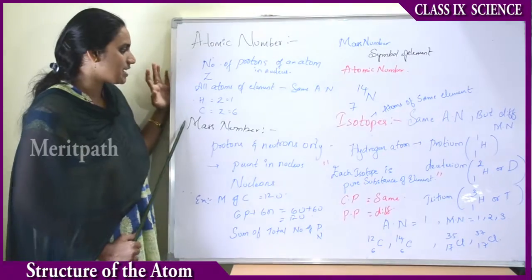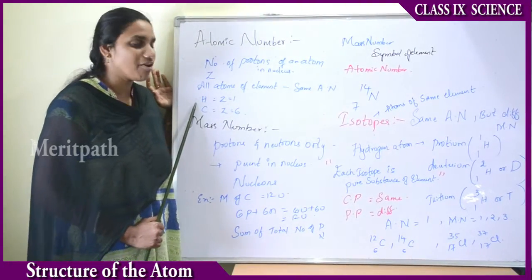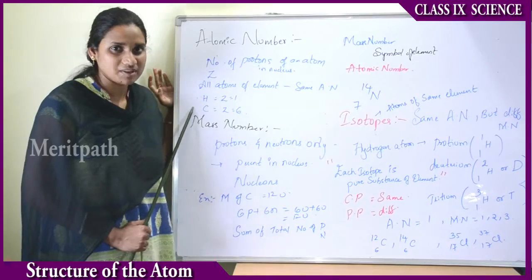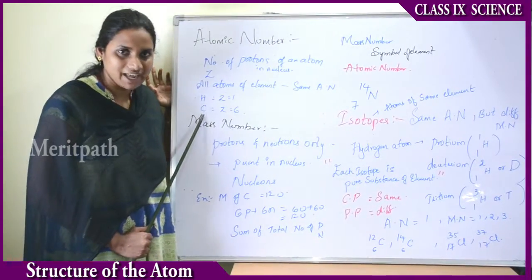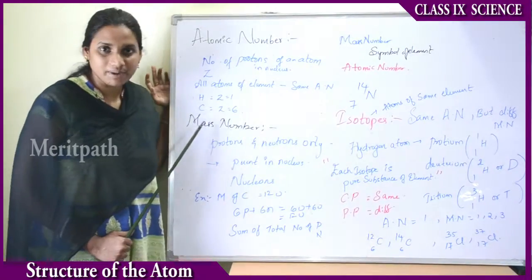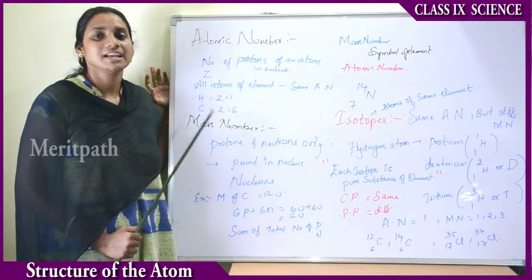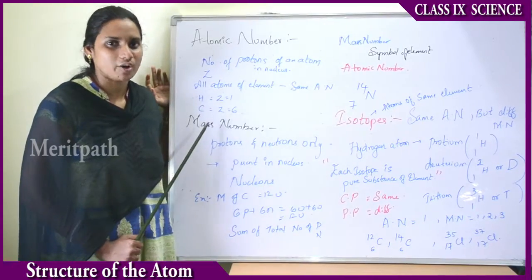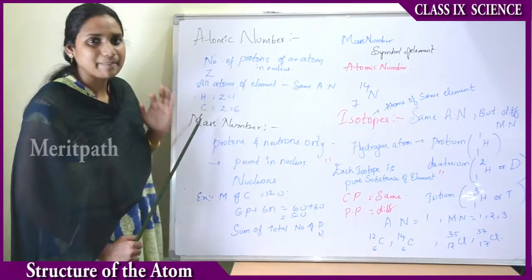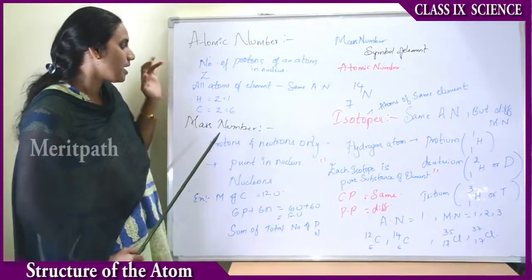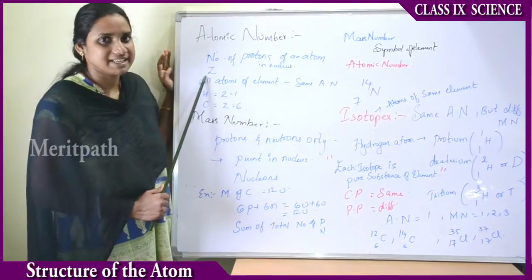For example, for hydrogen, the number of protons is 1, therefore the atomic number of hydrogen is 1. For carbon, the atomic number is 6 because there are 6 protons in the carbon atom. The atomic number is represented by the symbol Z.